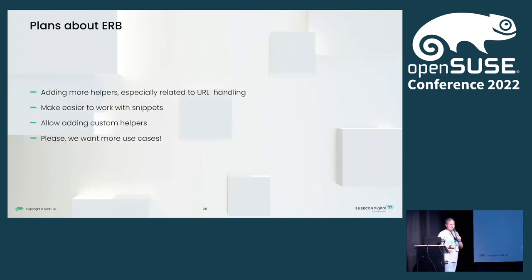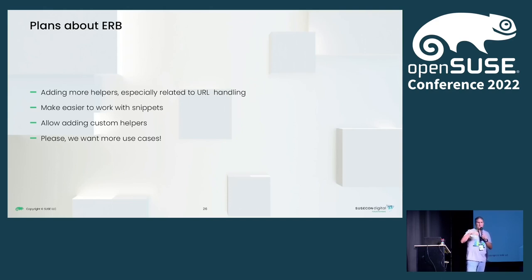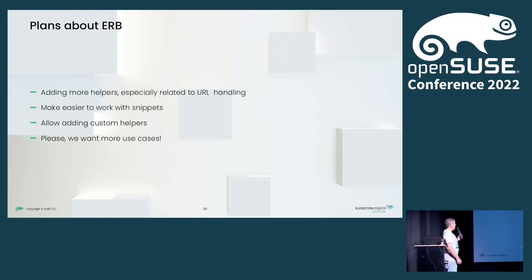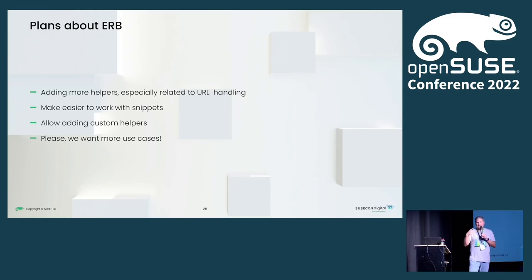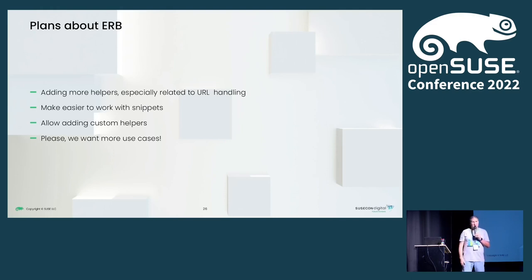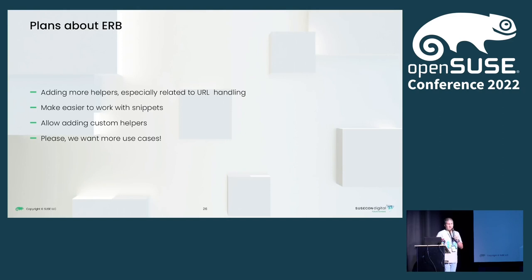What are the plans for ERB? We would like to add more helpers, especially related to URL handling, including more files into the profile, and finding some kind of include helper. We would like to make it easier to work with snippets and make it possible for you to include your own helpers. And of course, we would like to know more use cases that you can think of — maybe it solves problems you are having without ERB. We talk to some customers and users, but we would like more information.